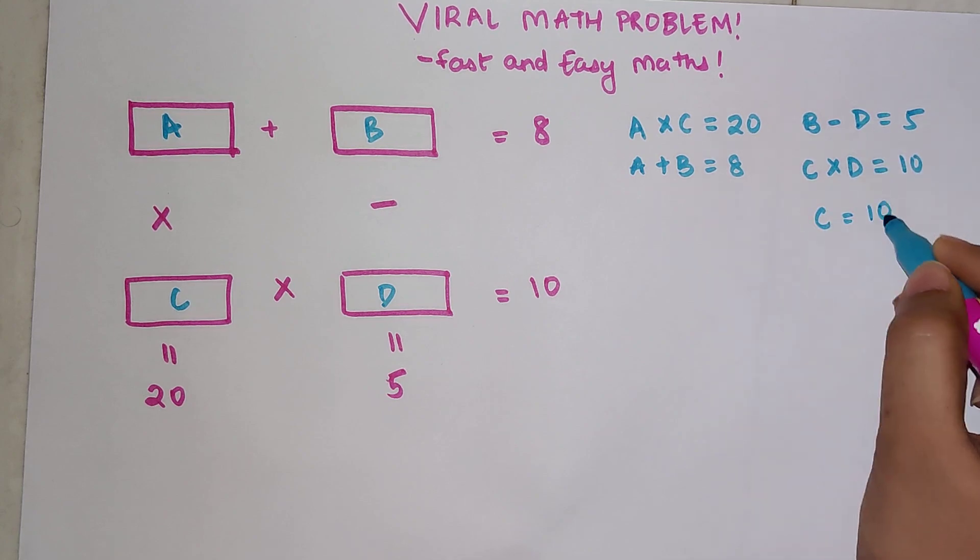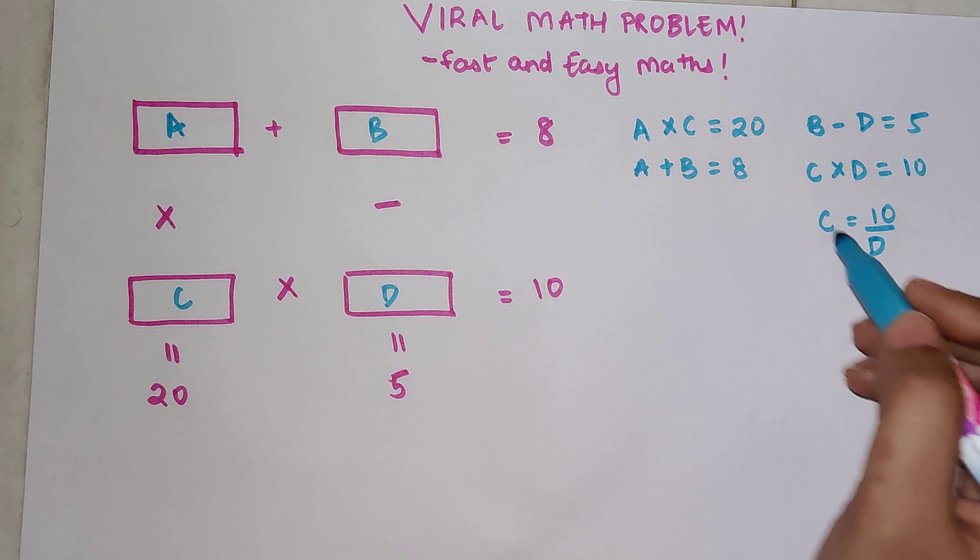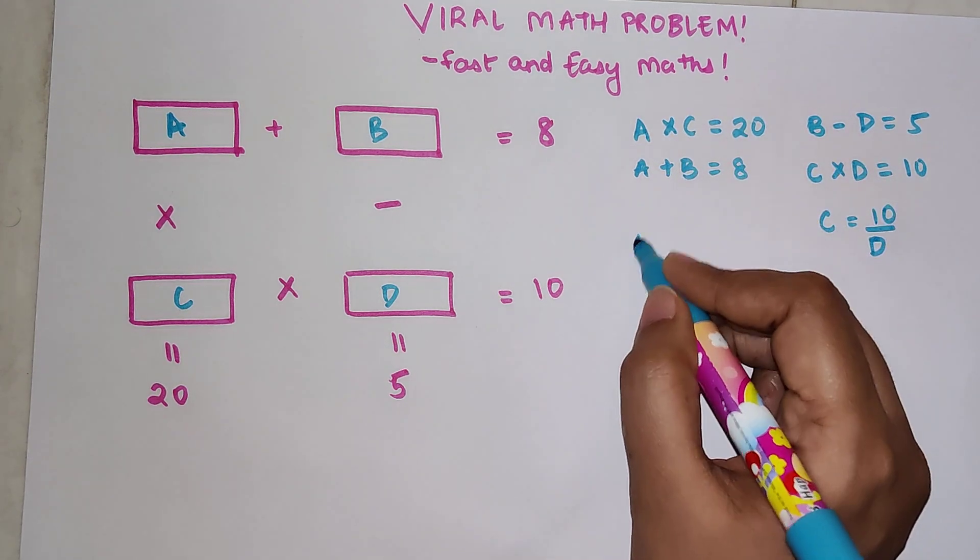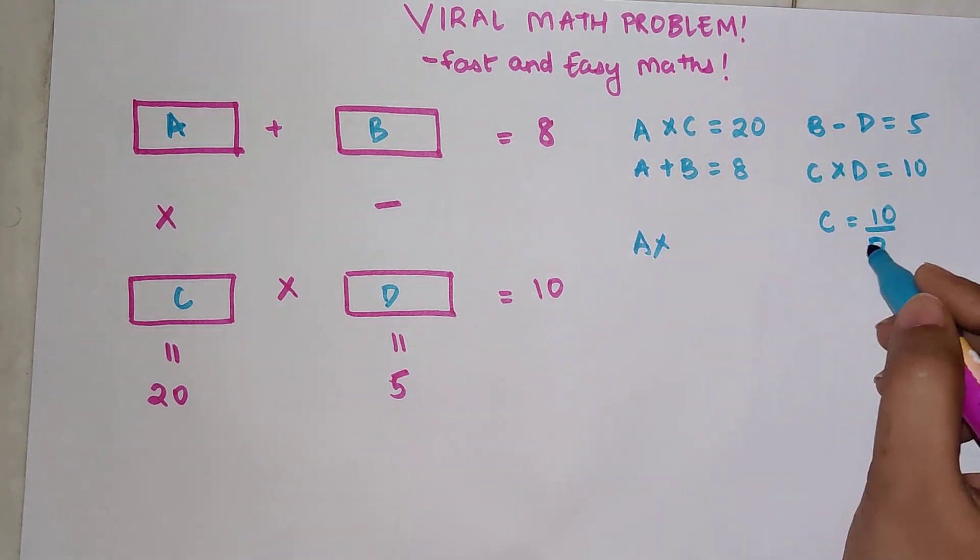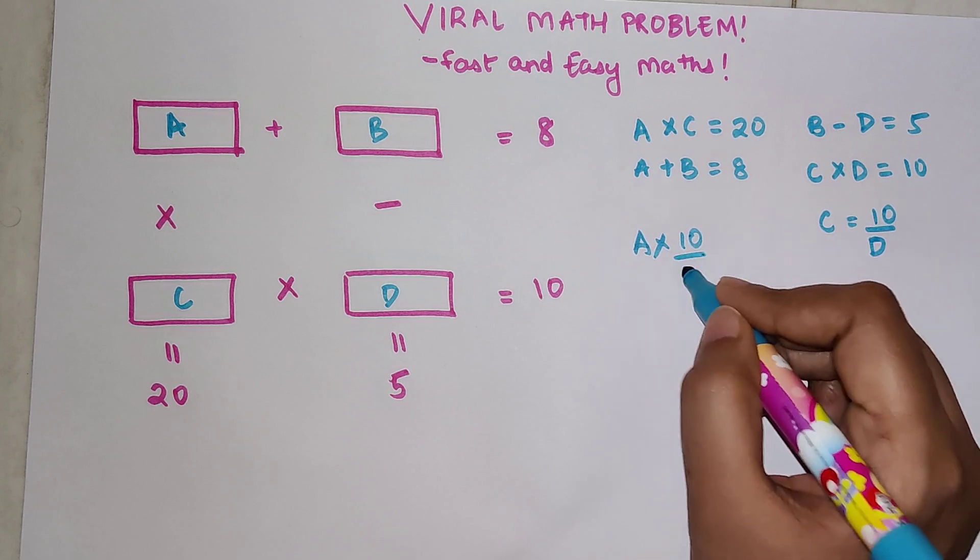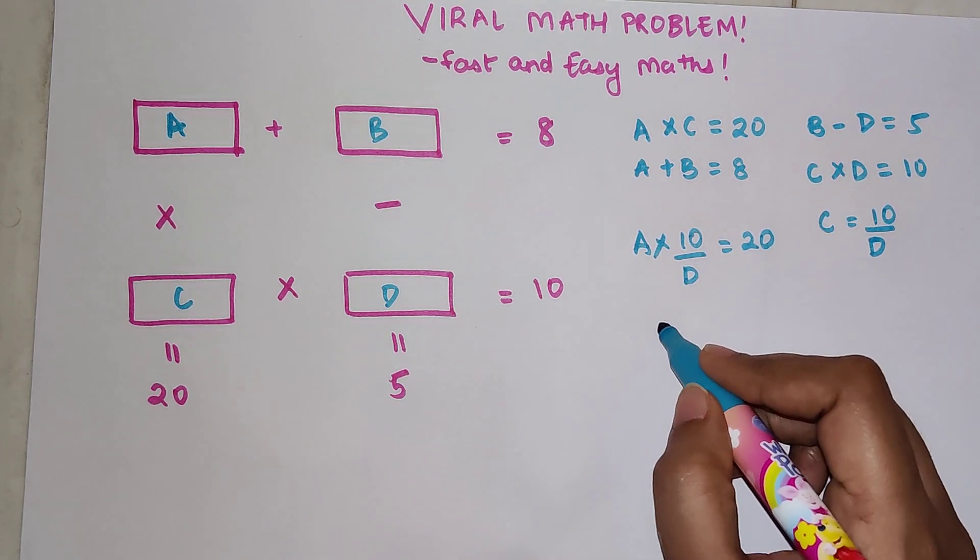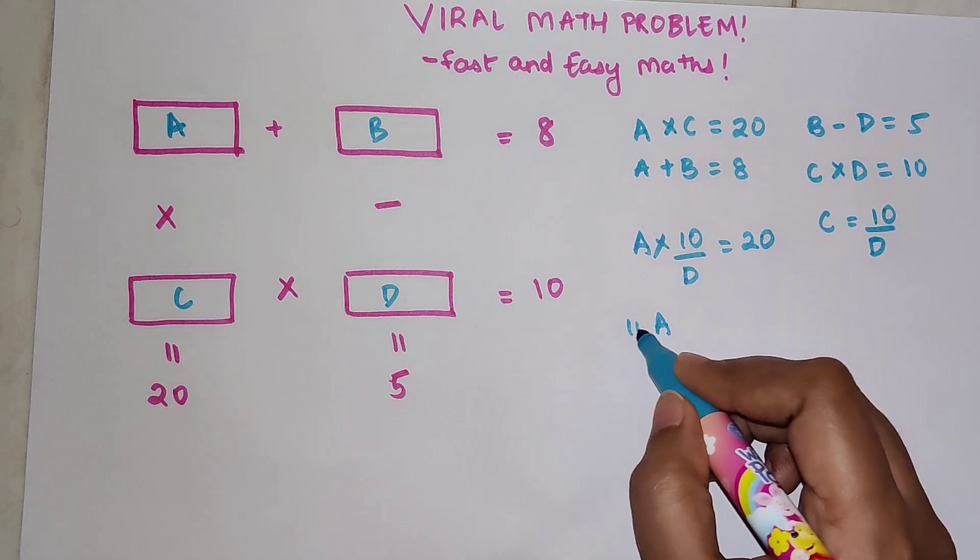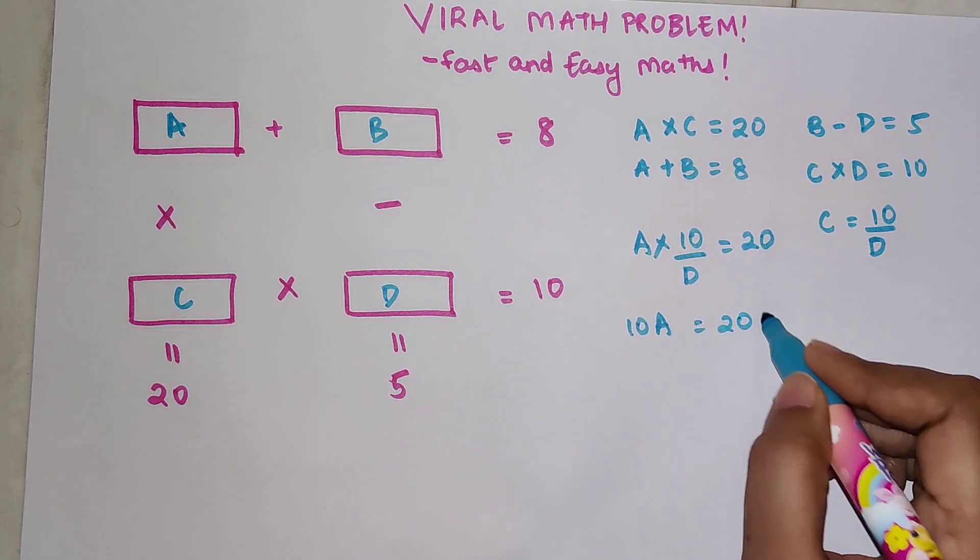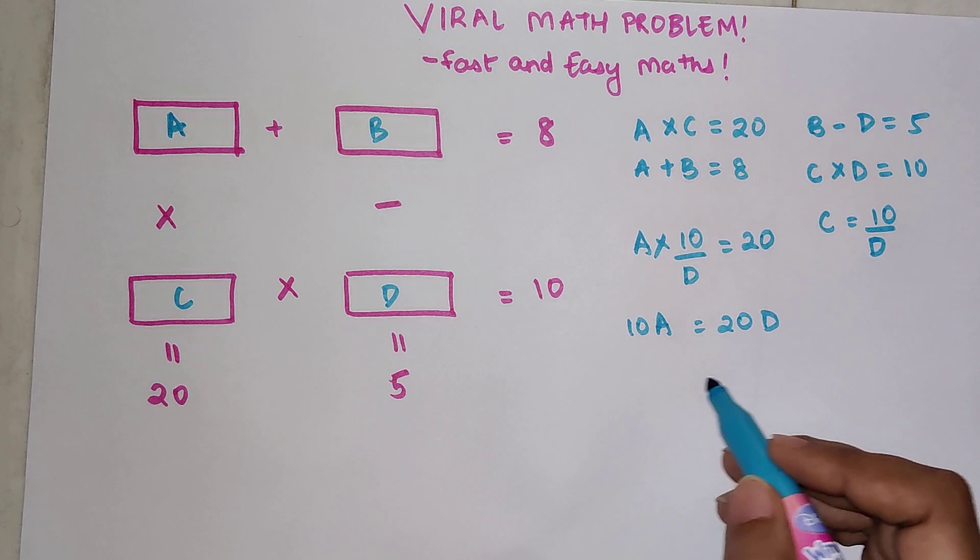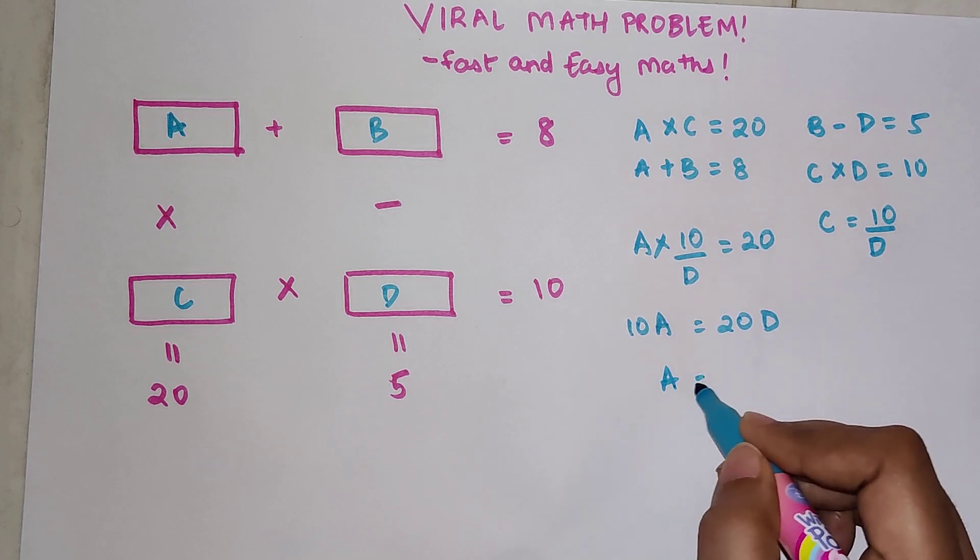So from here I can say that C equals 10 upon D, and I can put this value in over here. So I can say instead of C, I am going to put 10 upon D equals 20. So now A times 10, A equals 20D. Dividing both sides by 10, I can say A is equal to 2D.